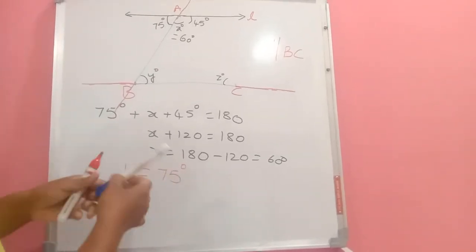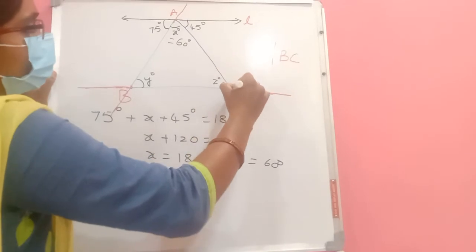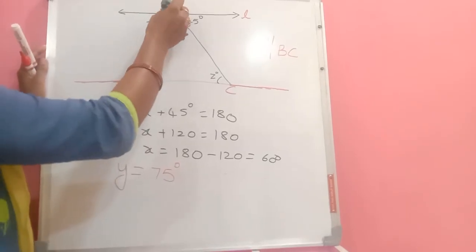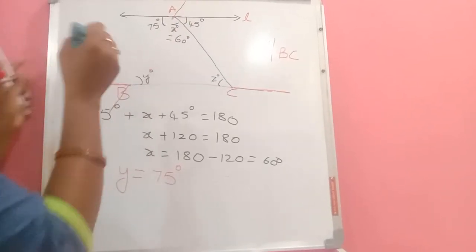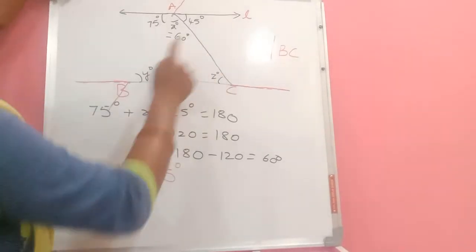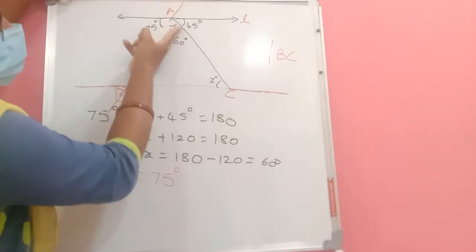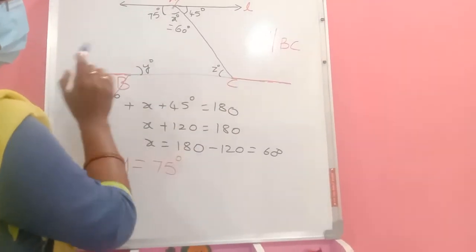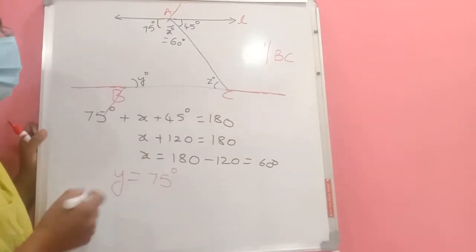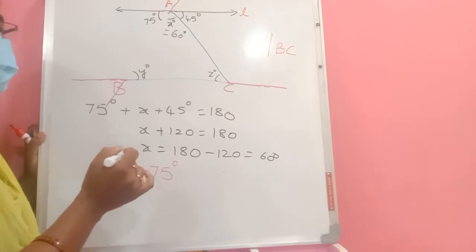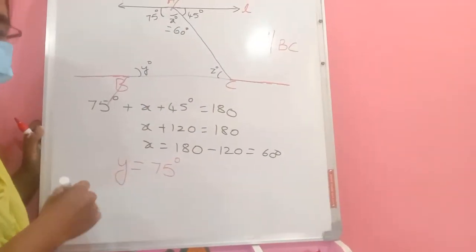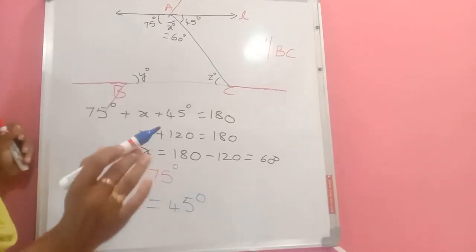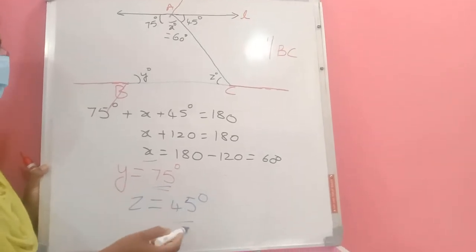Similarly, taking AC as a transversal between parallel lines L and BC: angle Z and the 45-degree angle are alternate interior angles on opposite sides of the transversal. Therefore Z = 45 degrees. So X = 60 degrees, Y = 75 degrees, and Z = 45 degrees.